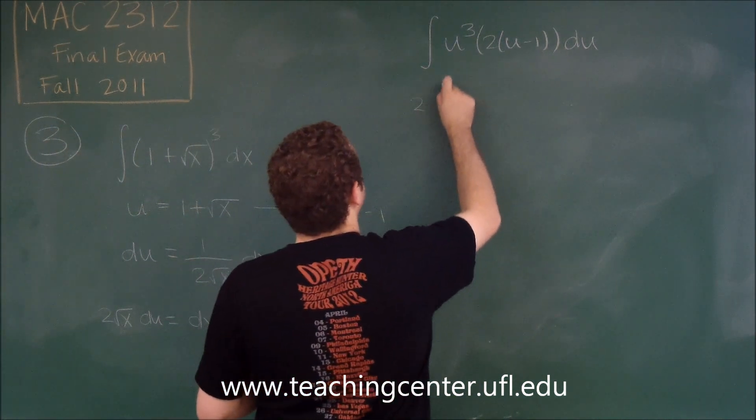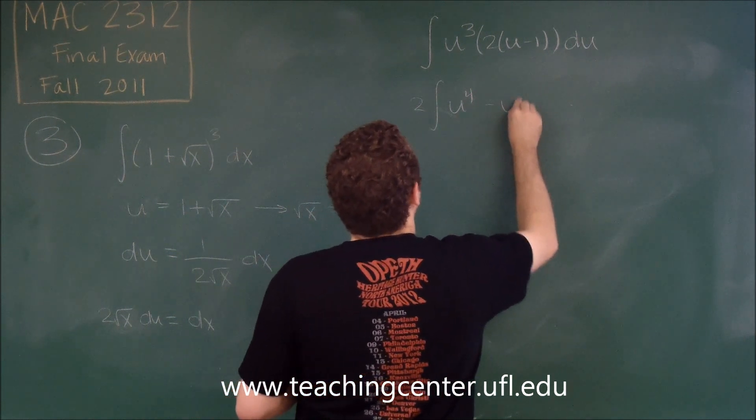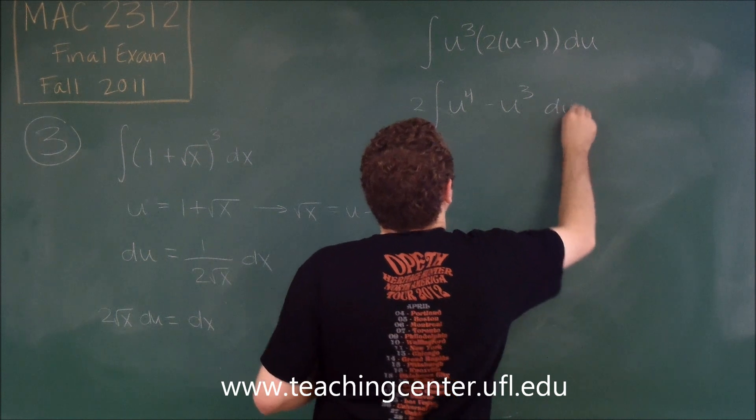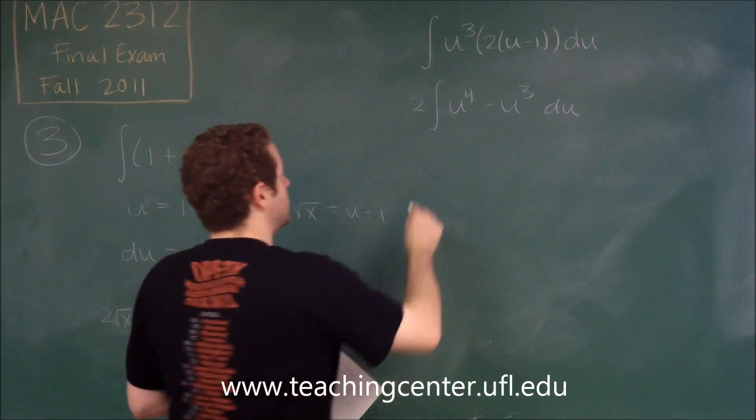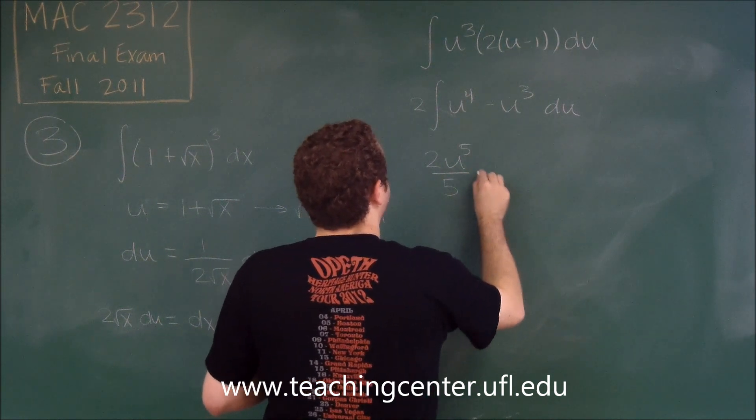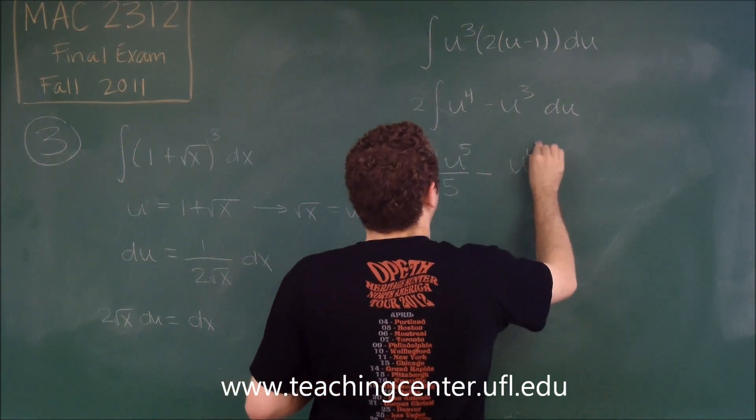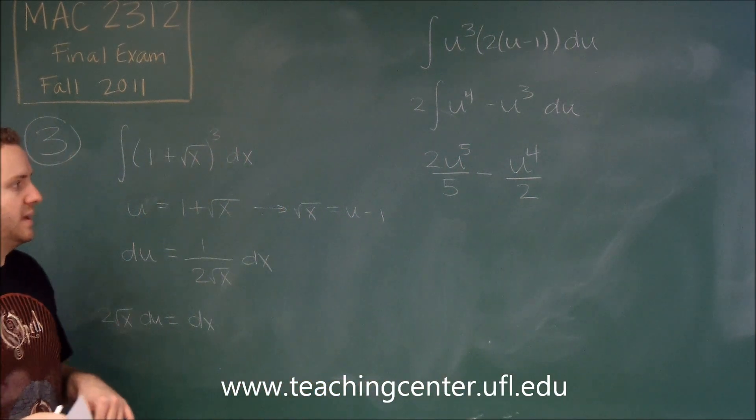So we can bring the two out front and distribute the u cubed, u to the fourth minus u to the third du. And now we can take the antiderivative. So we get two u to the fifth over five minus u to the fourth over two. I have distributed the two to both of those in that same process.